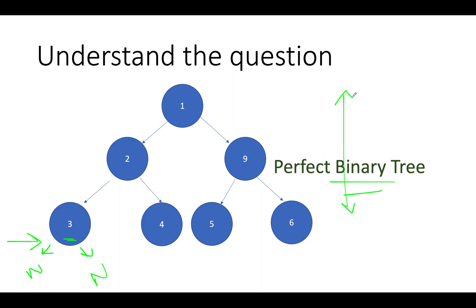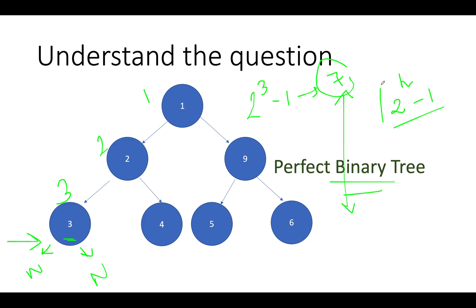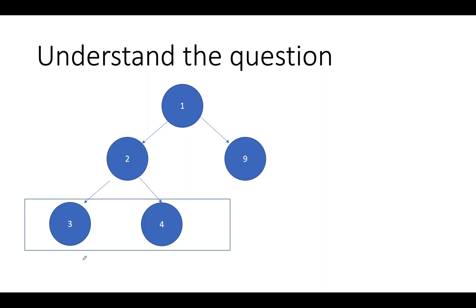The answer is yes. If the depth is three, the number of nodes is 2 raised to the power 3 minus 1, which equals 7. Let's count: one, two, three, four, five, six, seven — confirmed. So for a perfect binary tree of height h, the number of nodes is 2^h − 1. The tree shown here is an example of a complete binary tree.